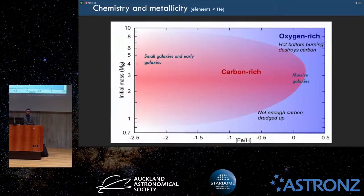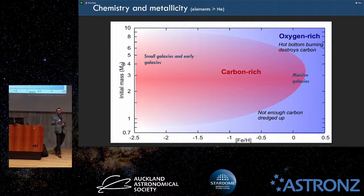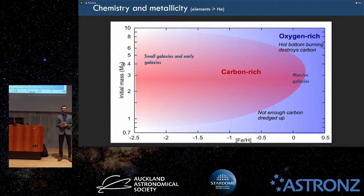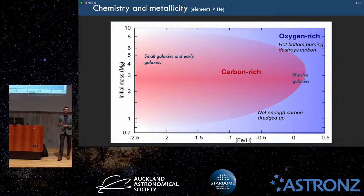We think that for some of the earliest universe, the galaxies and the stars in those galaxies are mostly carbon-rich, whereas our own galaxy and nearby galaxies like Andromeda are primarily oxygen-rich.